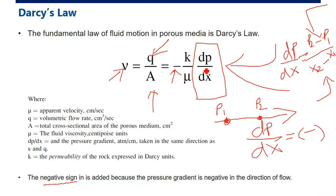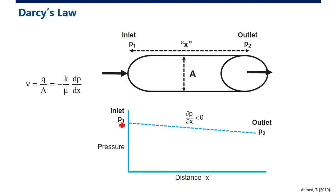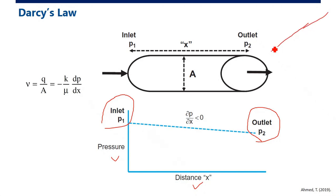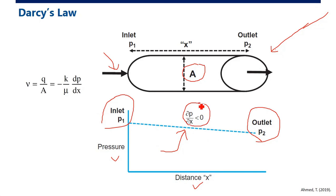In the plot, p1 is the inlet pressure and p2 is the outlet pressure, with p1 greater than p2. The pressure decreases along the flow direction, so the slope is negative, meaning dP/dx is below zero. We multiply by the negative sign to obtain a positive velocity.